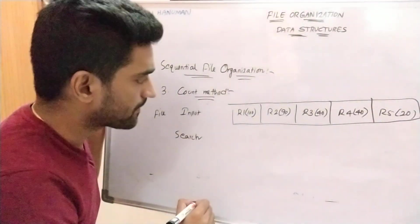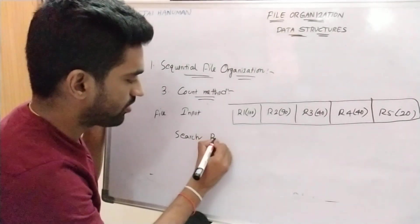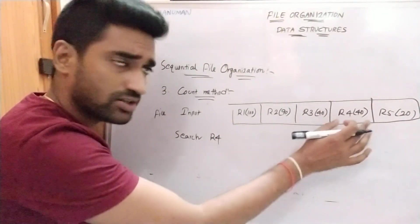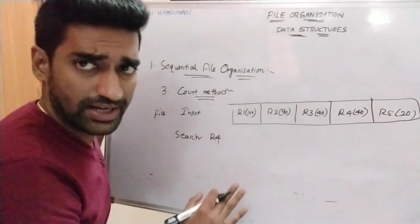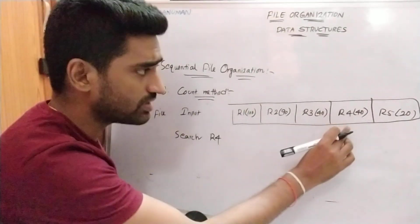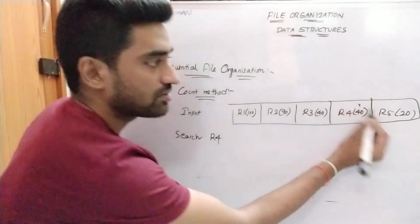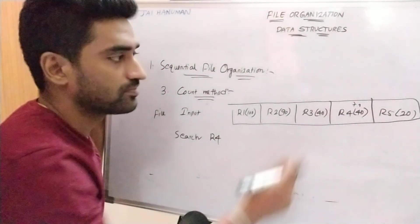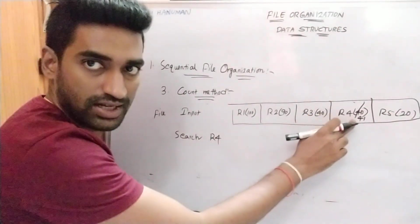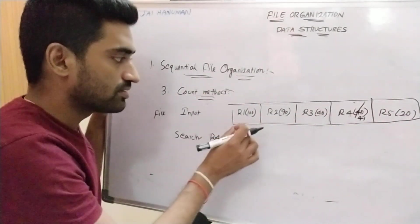Now I want to search r4 record in this file. In sequential search, we apply the searching process in sequential manner until we find the desired record. So first r1 — not found, then r2, r3, r4 — r4 is found. After finding the element, the counter value is incremented by 1, so r4's counter becomes 41.